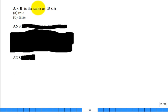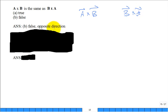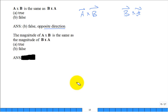Here's a question: is A cross B the same as B cross A? It's not the same. The magnitude stays the same, but the direction of C is reversed — it'll be in the opposite direction. So the magnitude of A cross B equals the magnitude of B cross A, but the vectors themselves are negatives of each other.